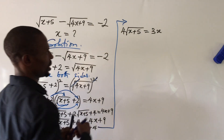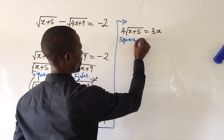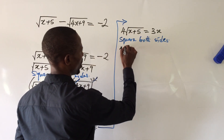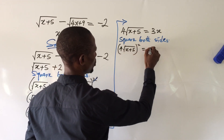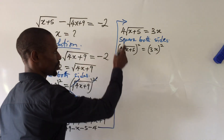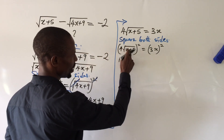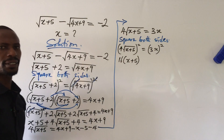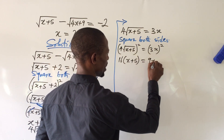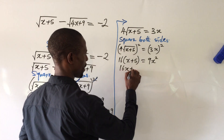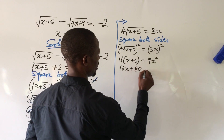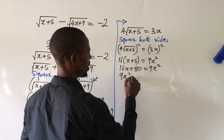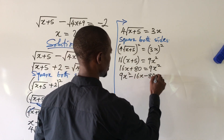We square both sides again. This gives us 4 times square root of (x + 5), squared, equals 3x squared. The left side becomes 16 times (x + 5), which is 16x + 80. The right side is 9x squared. Rearranging gives us the quadratic equation: 9x squared minus 16x minus 80 equals 0.